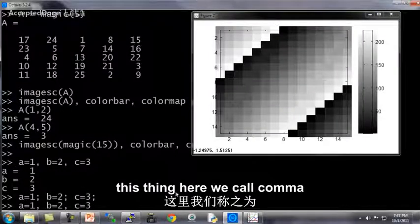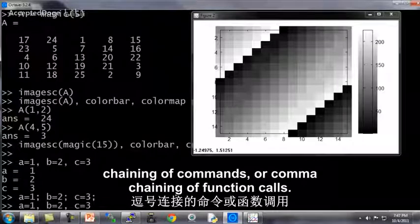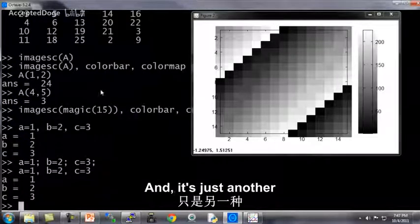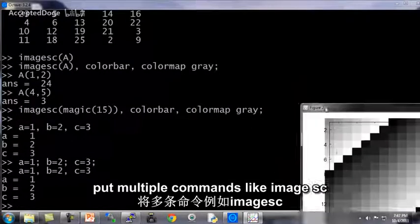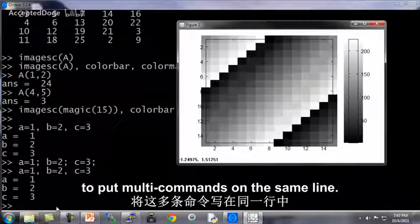Except that if I use semicolons instead of a comma, it doesn't print out anything. So this thing here we call comma chaining of commands, or comma chaining of function calls. And it's just another convenient way in Octave to put multiple commands, like MHSC, color bar, color map, to put multiple commands on the same line.